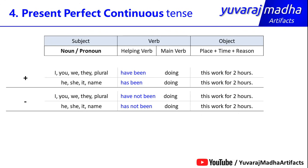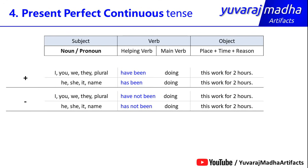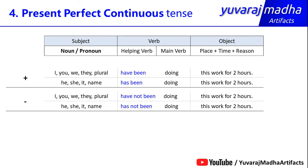For negative sentences: 'I have not been doing this work for two hours.' 'He has not been doing this work for two hours.' 'It has not been doing this work.' 'Kiran has not been doing this work.' For example: 'You have not been attending the classes since Monday.' Or: 'You have not been attending the classes for one week.' In this way we form negative sentences.